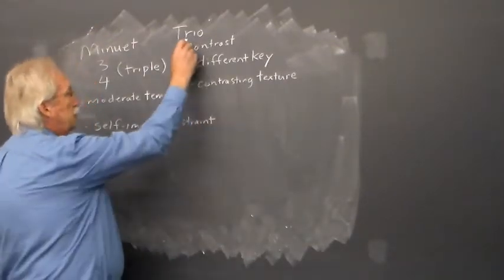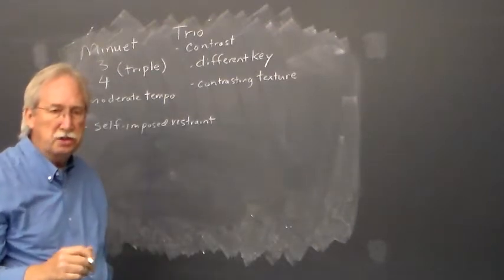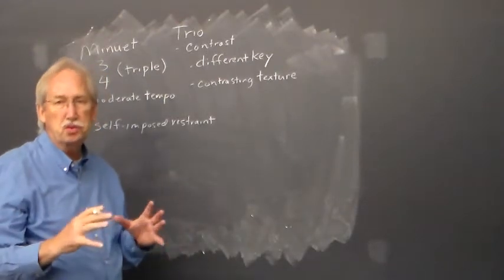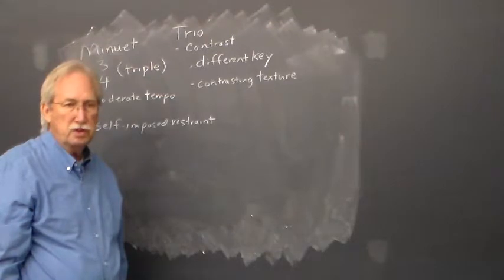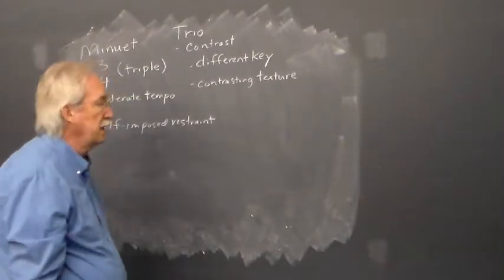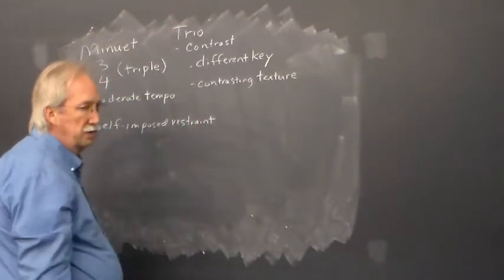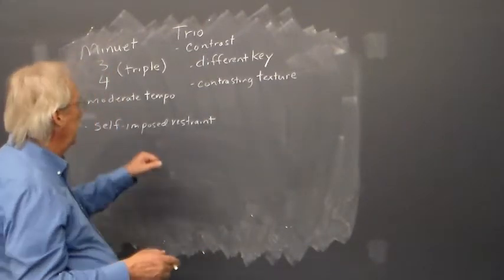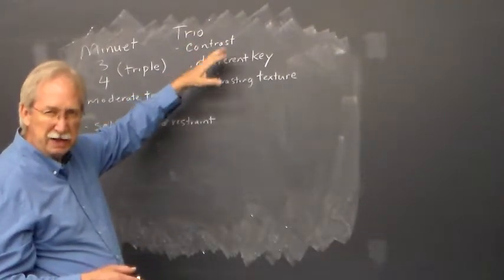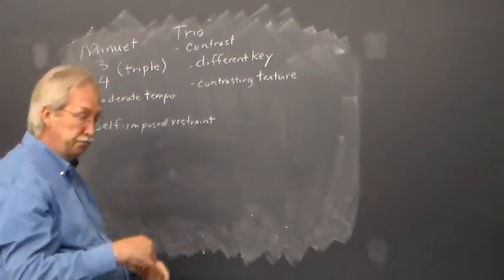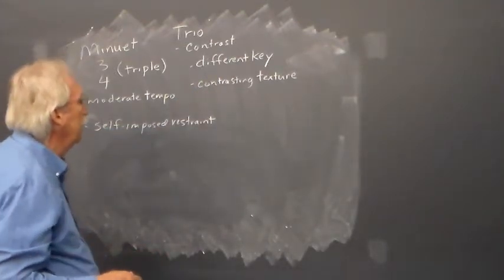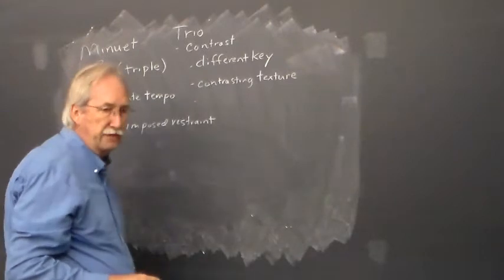The term trio initially was used by Lully and referred to passages where the number of players reduced to three. In an orchestral work you'll look for a reduction in the number of players at the beginning of the trio section. You can find other textural contrasts like homophonic texture in the minuet and polyphonic imitative texture in the trio, or vice versa. Then of course you would have contrasting themes.